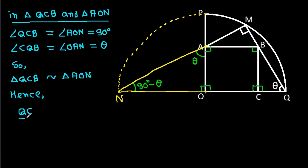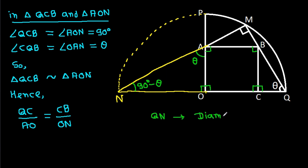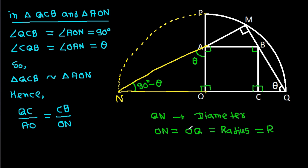Hence, QC over AO is equal to CB over ON. We know that QN is the diameter, so ON will be equal to OQ, which is the radius. Suppose the radius ON is R and OQ is R.